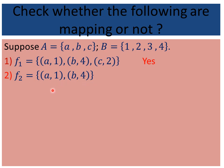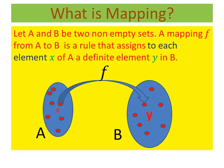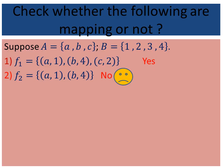Clearly F2 is a relation because F2 is a subset of A × B. Now the question is: is F2 a mapping? The answer is no. By the definition, each element of A must participate. But here c does not participate in the relation, therefore this is not a mapping.